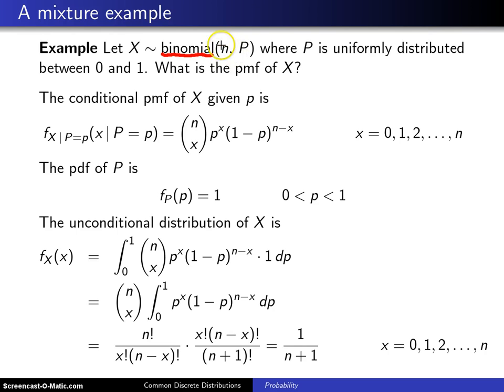Well, n was always assumed to be a constant positive integer, and p was always assumed to be a constant probability between 0 and 1. But what if, instead of assuming both of them are constants, we decide to let p be a random variable?